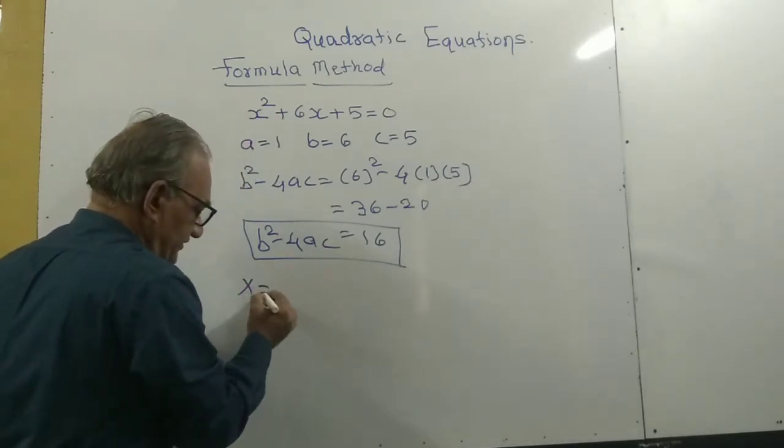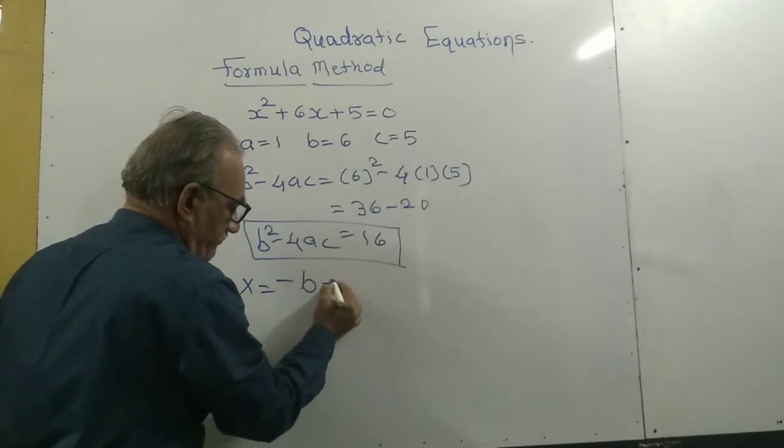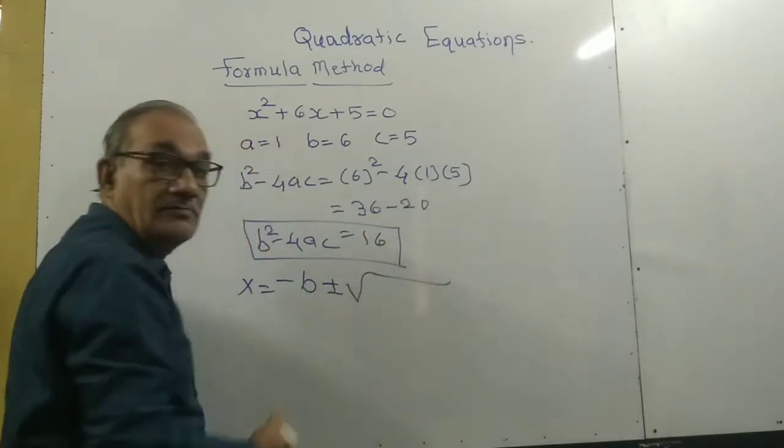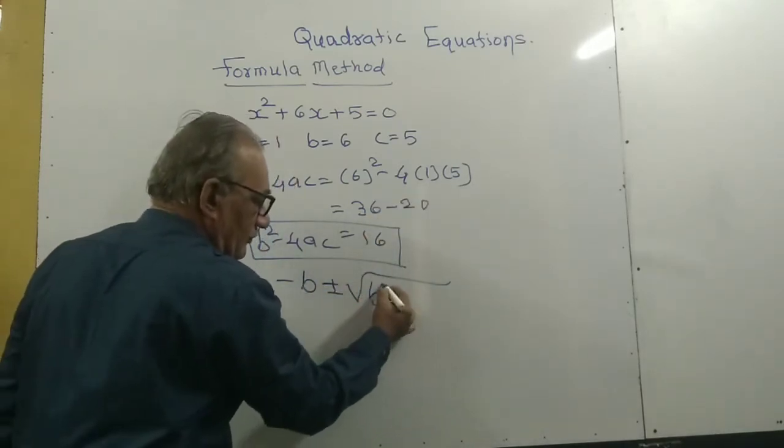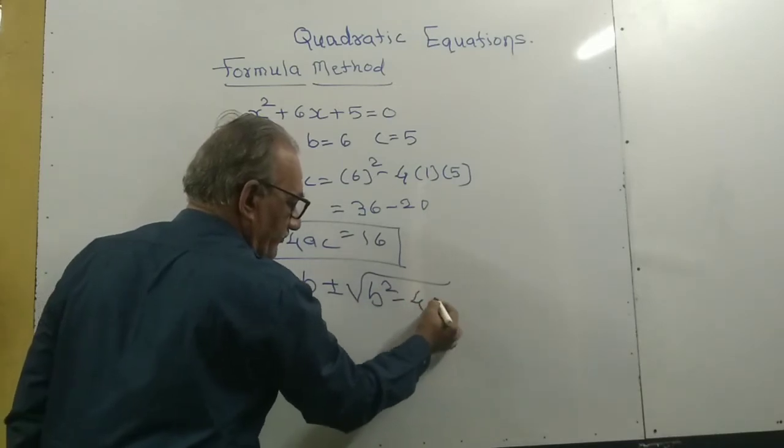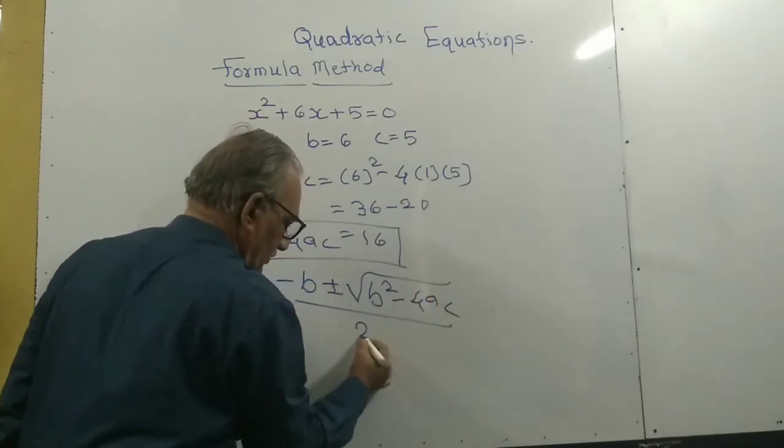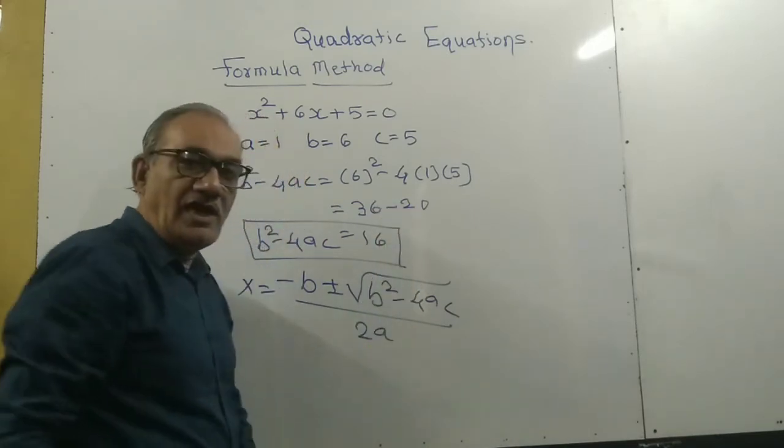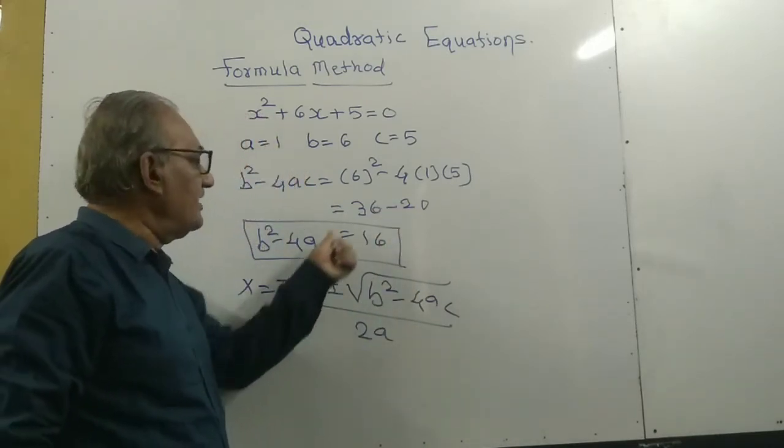x is equal to -b ± √(b² - 4ac) upon 2a. Now we'll put the discriminant value b² - 4ac.